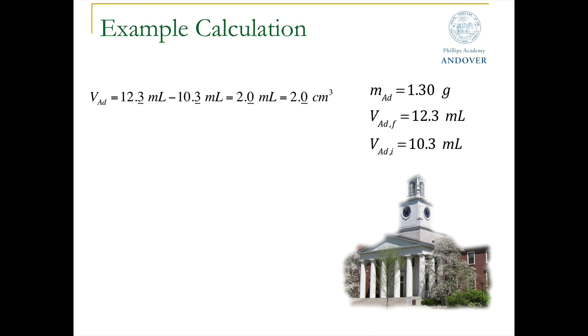More importantly, we know that the density is mass over volume. So to access the volume, we're going to take the final volume, 12.3 milliliters, and subtract 10.3 milliliters from that value. Now, this problem has been designed to test your knowledge of significant figures. Namely, we recall that the rule for addition and subtraction is that we keep the fewest number of decimal places. Notice that both volumes have one decimal place. So our answer should be reported not as 2 or 2.00, but rather as 2.0 milliliters.